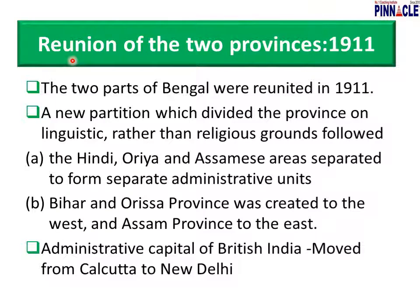Great improvements were made in Indian art during this period. Prior to the partition of Bengal, Indian artists generally looked toward Victorian art for inspiration, but now they sought inspiration from indigenous traditions of Mughal, Rajput, and Ajanta art. The Indian Society of Oriental Art was founded, and Nandalal Bose was the first recipient of the scholarship offered by them.